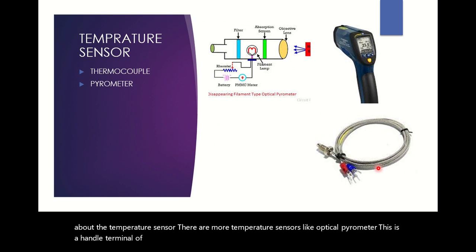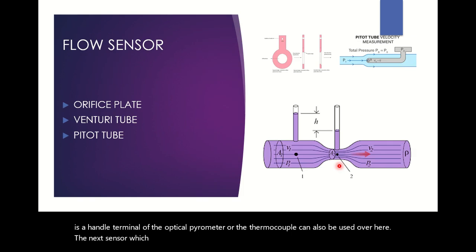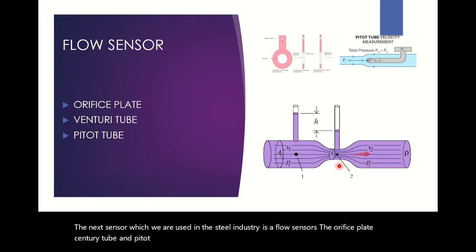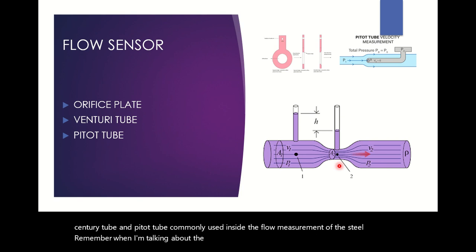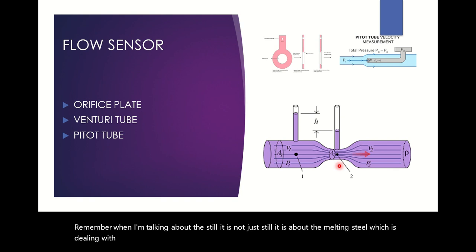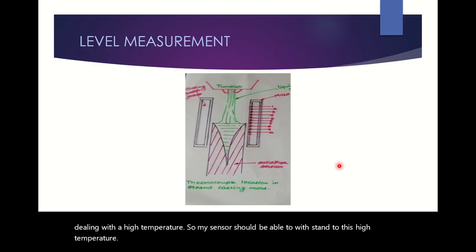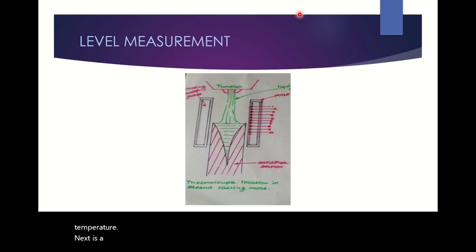The next sensors used in the steel industry are flow sensors. Orifice plates, venturi tubes, and pitot tubes are commonly used for flow measurement in steel processing. Remember, when dealing with steel, it is the molten steel at high temperatures, so the sensors must be able to withstand these high temperatures.